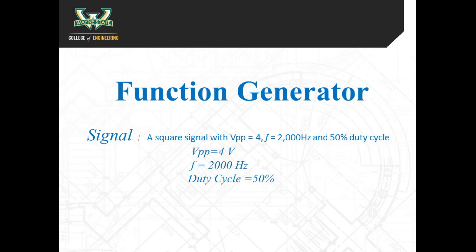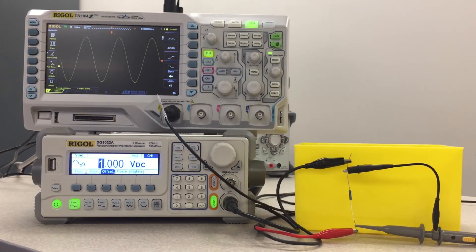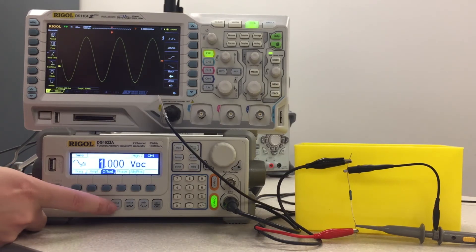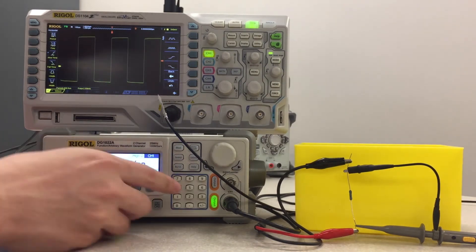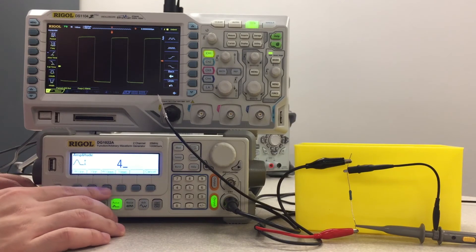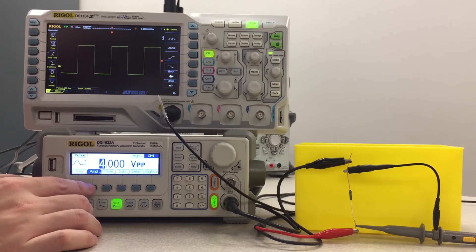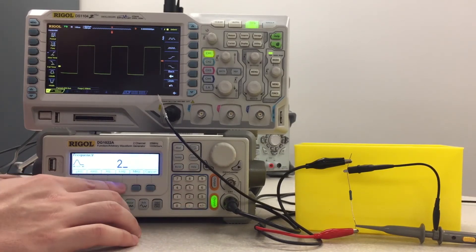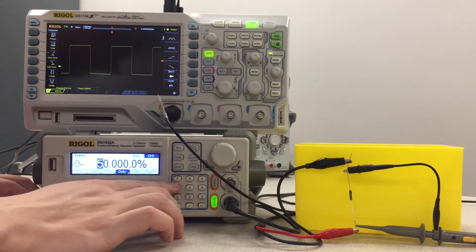Please refer to the following steps to generate a square waveform. Press the square function key and then press the amplitude key to set the VPP value. Then press the frequency key to set the frequency of the waveform. Press the duty cycle key to adjust the duty cycle.